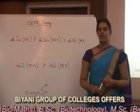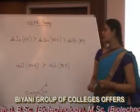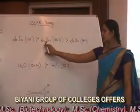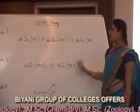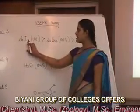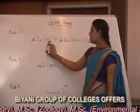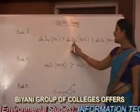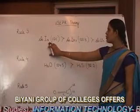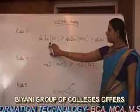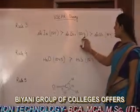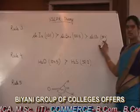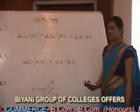Rule third: it states that bond angle decreases as the electronegativity of the atoms attached to the central atom decreases. For example, in AsI₃, the bond angle is 101 degrees, and when we shift to AsBr₃, bromine is more electronegative than iodine. Hence, the bond angle decreases, and in AsCl₃, the bond angle decreases to 98.4 degrees.